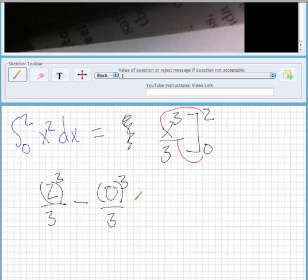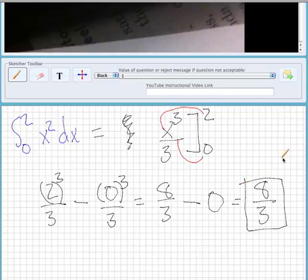And then that's what our integral is going to be equal to. This is going to be 8 over 3 minus 0 over 3, which is 0. So then the entire thing is going to equal 8 over 3.